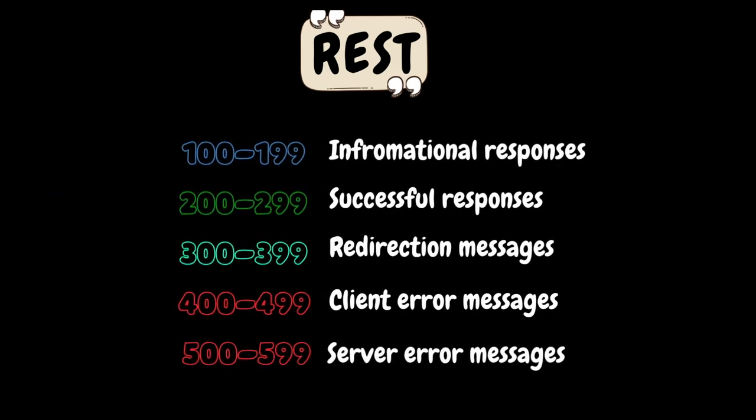The two most common formats for REST API payloads are JSON (JavaScript Object Notation) and XML. Once we send the request to the server, it processes it and formats the result into a response. The first line of the response contains an HTTP status code to tell the client what happened to the request. HTTP response codes are grouped in five classes: 100-199 are informational messages, 200-299 are successful responses, 300-399 are redirection messages, 400-499 are client-side errors, and 500-599 are server-side errors.